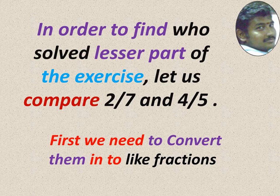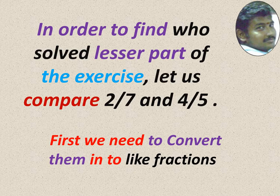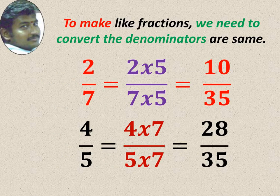Here 2 by 7 and 4 by 5 are unlike fractions. So what we have to do? We need to convert them into like fractions. To compare, we have to make like fractions. 2 by 7 and 4 by 5, we have to make it like fraction. Like fraction means denominator must be same.